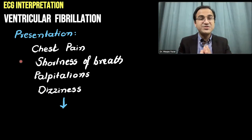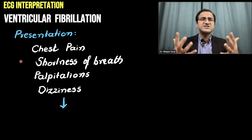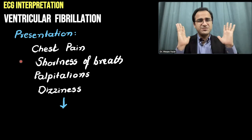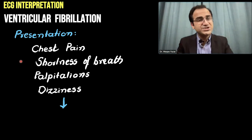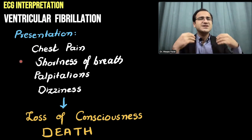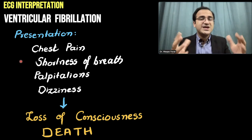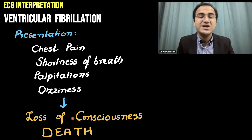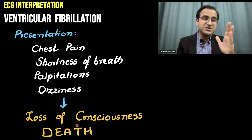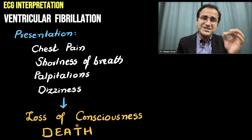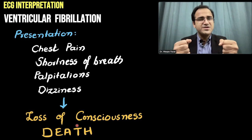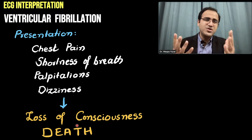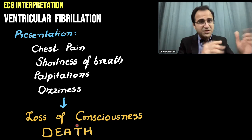A classical presentation of a patient with ventricular fibrillation would be chest pain, shortness of breath, palpitations, and dizziness. Within seconds the patient will deteriorate, lose consciousness, and have no pulses. If you do not intervene, the patient will die. The only management of ventricular fibrillation is defibrillation — you start CPR and defibrillate the patient.